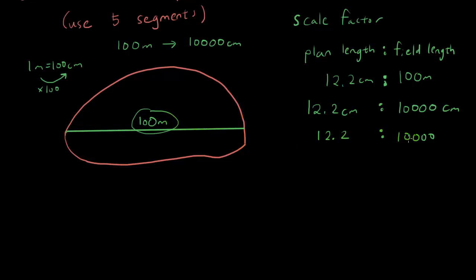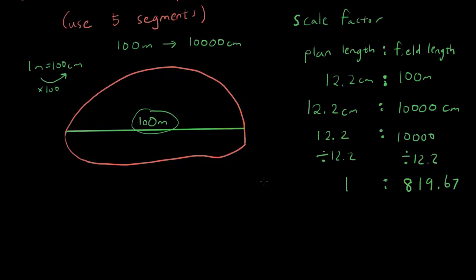We want the left-hand side to be 1 to simplify, so divide both sides by 12.2. That gives us 1 to 819.67. So one unit on this map equals 819 units in real life — one centimeter on the map is 819 centimeters in real life. The real-life length is 819 times the map length.